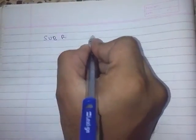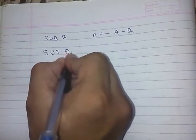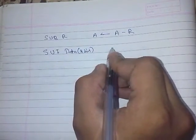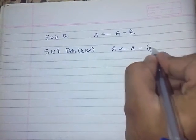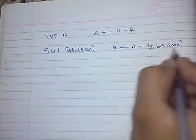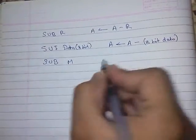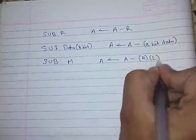Same as addition, we can also do subtraction. SUB R will do A = A - R, where R is any register. Or SUI data — this works the same as immediate addition but for subtraction, so A = A - 8-bit data. SUB M will be A = A - data of the H-L pair.